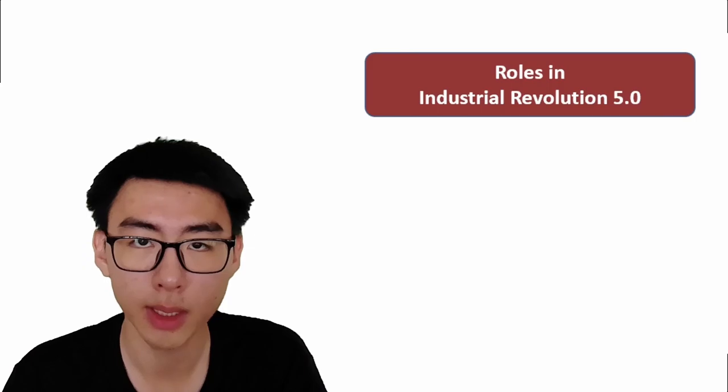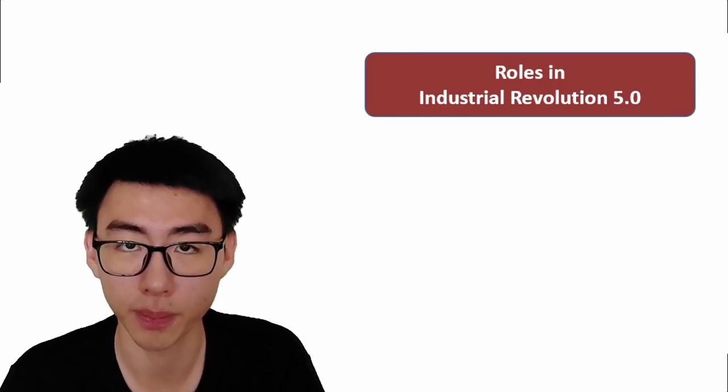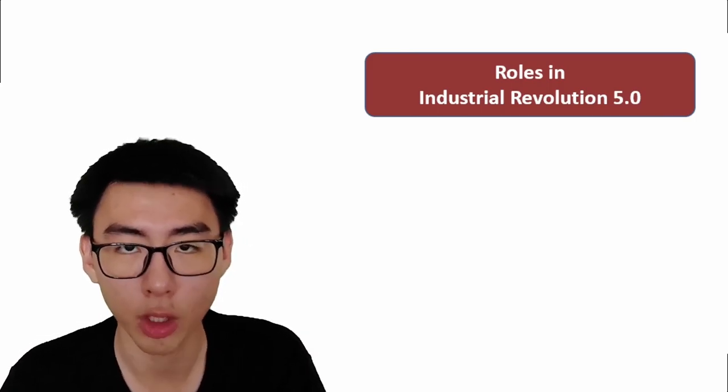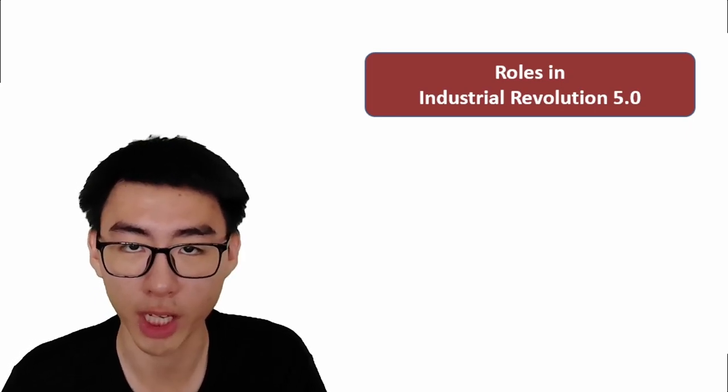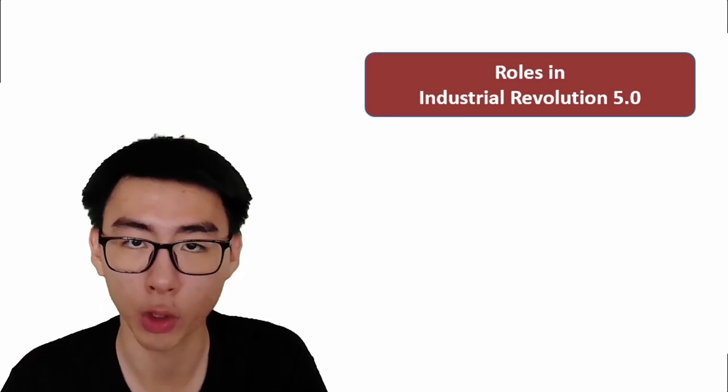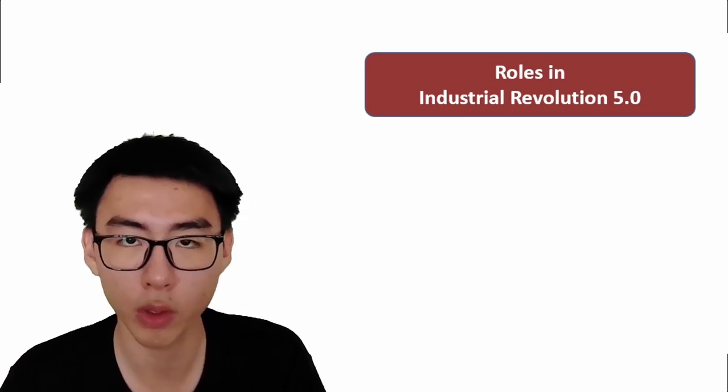With technological advancements in Industrial Revolution 4.0, some skill sets will be replaced or obsoleted, and there will be demand for new skill sets. The role of actuaries will change, and we need to stay relevant and coexist with AI in Industrial Revolution 5.0.